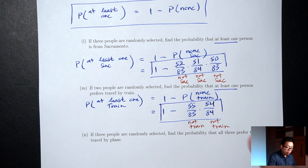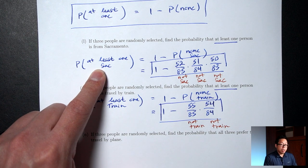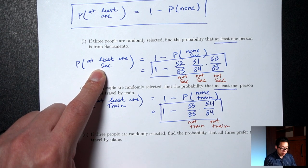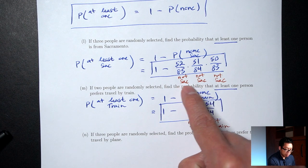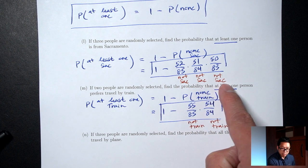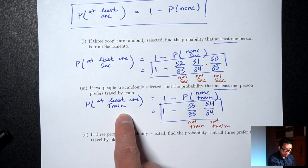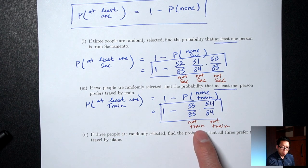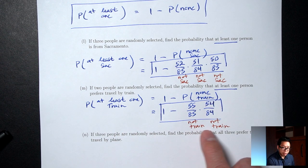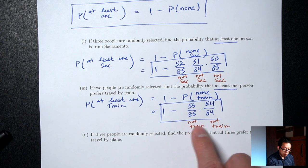Notice: I'm looking for 'at least one SAC' or 'at least one train,' but because I'm finding the answer using the complement, for the fractions I'm looking for 'not-SAC, not-SAC, not-SAC' or 'not-train, not-train.' Don't forget the 'not's.